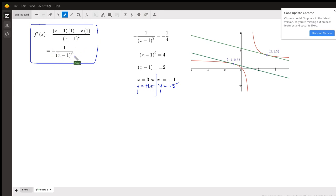This simplifies, and I want to know when does that equal negative one-fourth, which is the slope of this first green line here. So here I am solving this equation. I mentally multiplied both sides by negative one, and then cross-multiplied, and got x minus 1, the quantity squared equals 4.